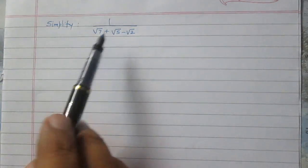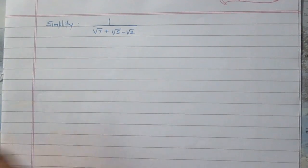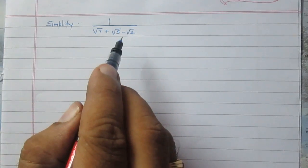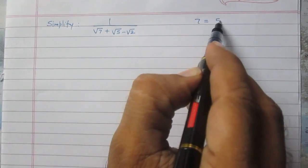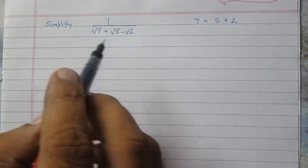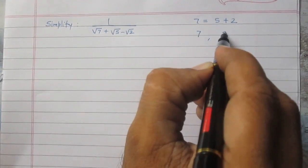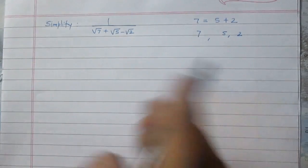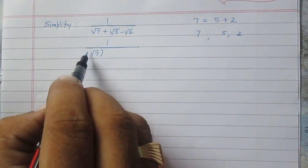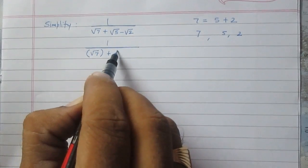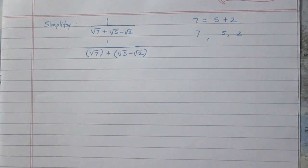Simplify 1 upon square root of 7 plus square root of 5 minus square root of 2. Here we will divide the numerator and denominator into two groups. We see that 7 is the sum of 5 and 2. In the first group we will keep square root 7, and in the other group we will keep square root 5 and square root 2.